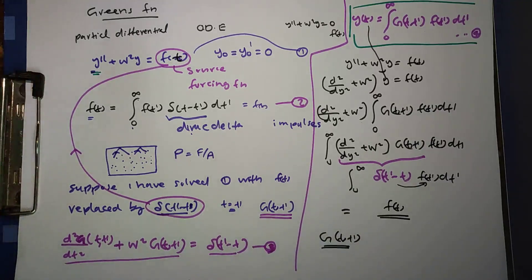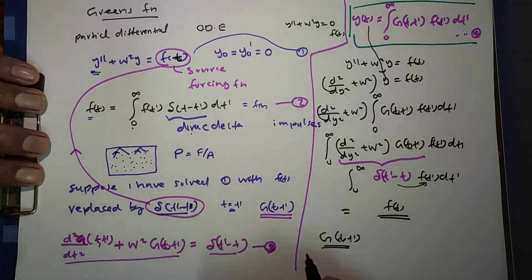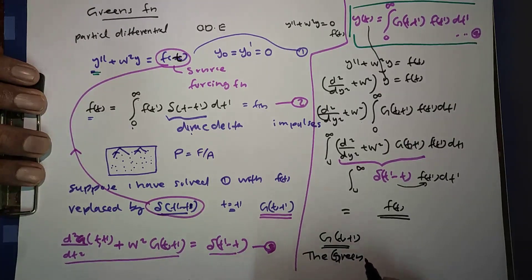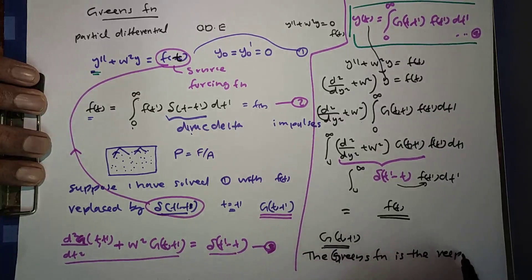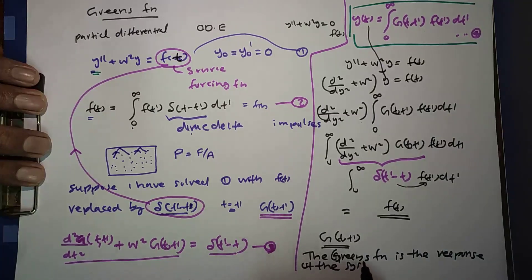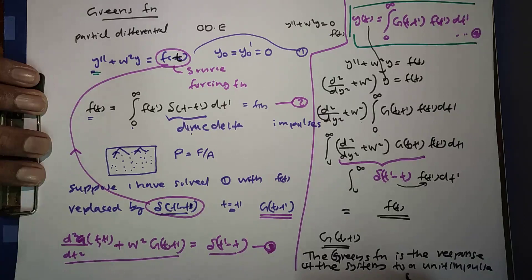So our conclusion is: the Green's function g of t, t prime is the response of the system to a unit impulse at t equals t prime.